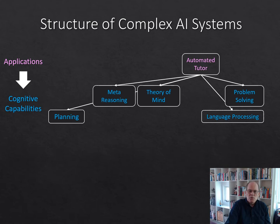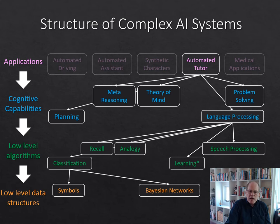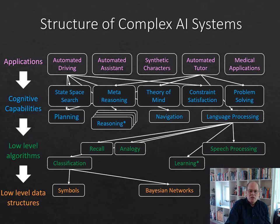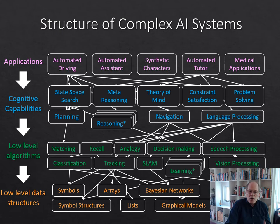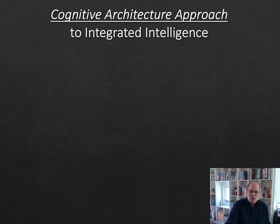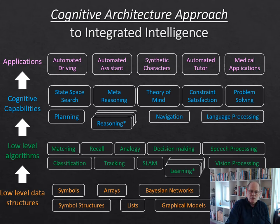Each one of these we can think about decomposing into lower level algorithms in AI, and also low level data structures. So if we look at multiple tasks such as automated driving, medical applications, and so on, we see that we're going to have a lot of different cognitive capabilities, and a lot of different low level algorithms and underlying data structures. One way to go after this problem is to think about the cognitive architecture approach — figuring out what the class of low level algorithms and data structures are that are shared across all these different cognitive capabilities, and then having a single system that supports all of them.